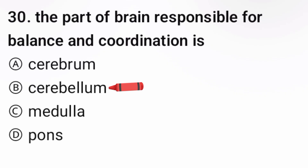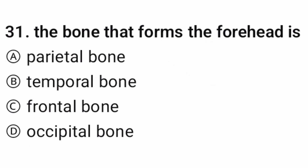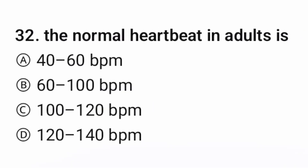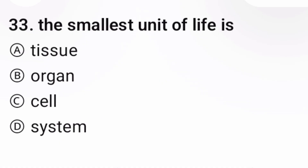The correct option is B, cerebellum. Question 31: The bone that forms the forehead is — the correct option is C. Question 32: The normal heartbeat in an adult is — the correct option is B, 60–100 BPM.